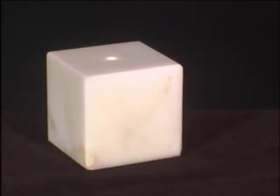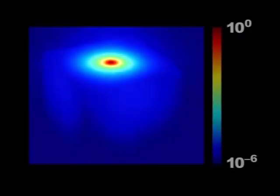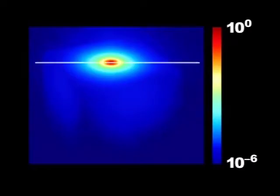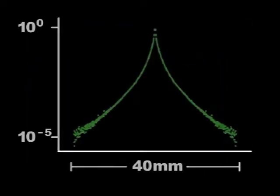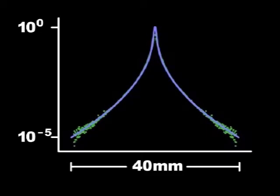We can capture the intensity of the reflected light using a high dynamic range photograph. A color coding reveals how the intensity of the scattered light changes with distance from the point of illumination. This plot shows the pixel values from a single slice through the image. By fitting our model to this reflectance profile, we can estimate the material's intrinsic scattering properties.